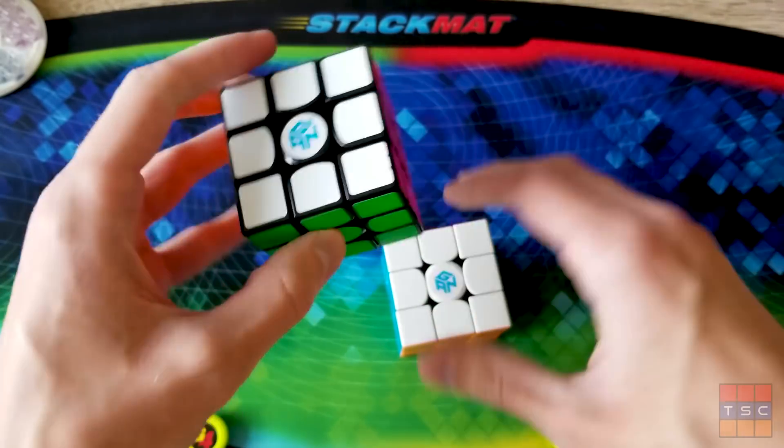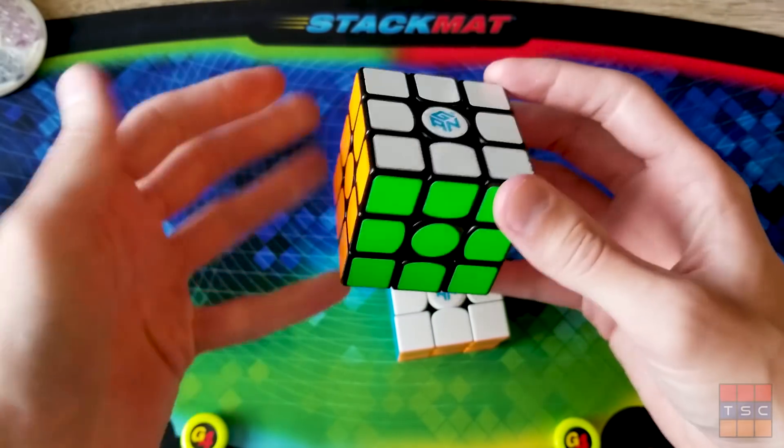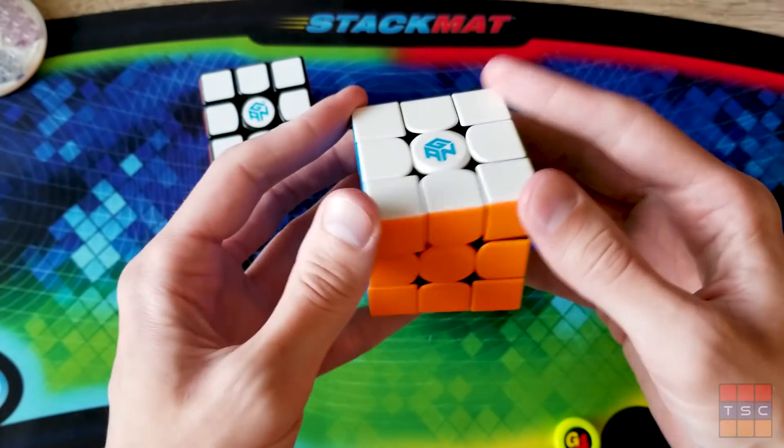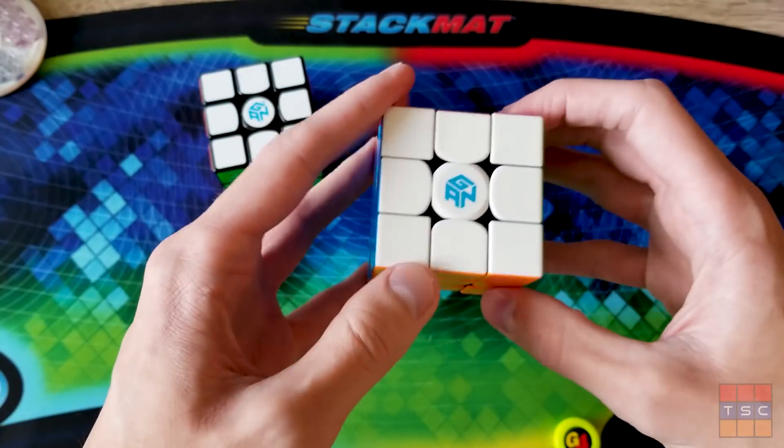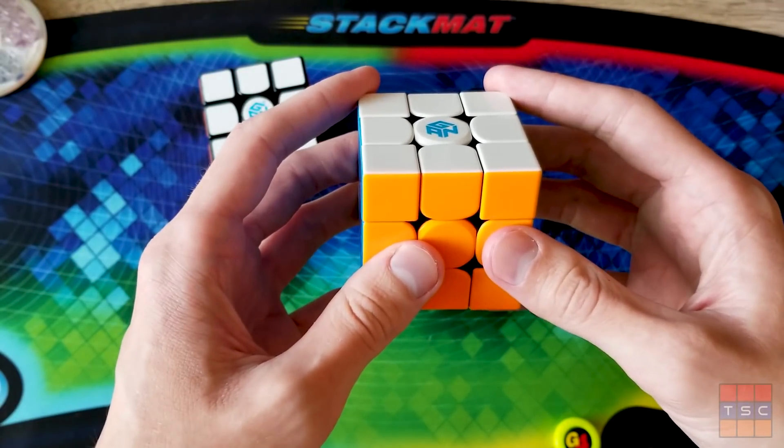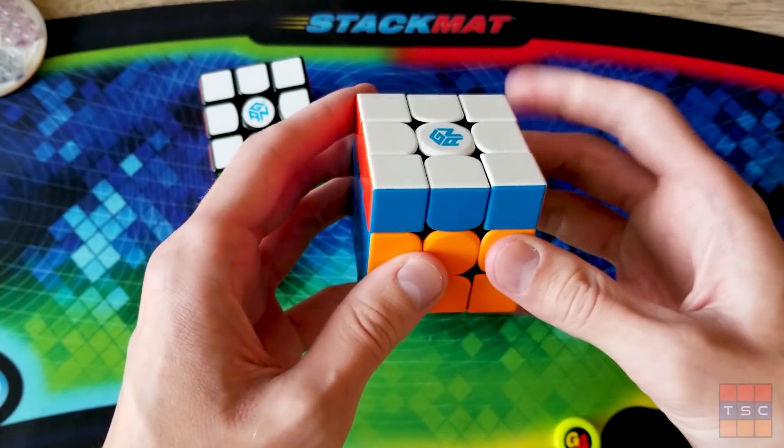One thing I noticed while I'm solving it is that the corners are a lot sharper than the SM. And that's something I don't really think about ever when I'm solving because it's never really been a big drastic difference. But this has some definitely sharp edges. It doesn't hurt my hand or anything. It's just kind of noticeable when I'm holding it like this. I can definitely feel how sharp it is right there.